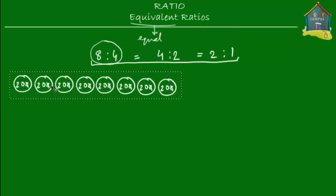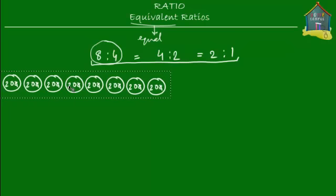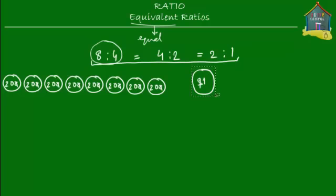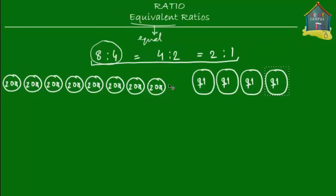Now I have 8 twenty-cent coins. How about 4 of some other thing — let's say 4 one-dollar coins, which are slightly bigger. So we have 8 twenty-cent coins and 4 one-dollar coins. The ratio of 20-cent coins to 1-dollar coins is 8 to 4.